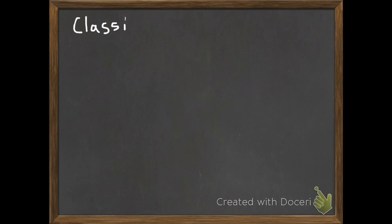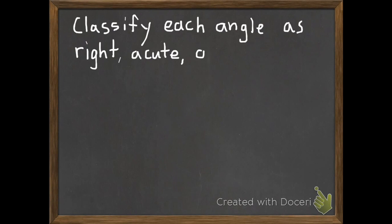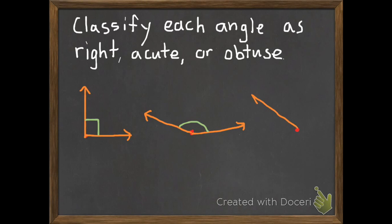Okay, and one more for you to do that I'll show you on the video. Then you'll be ready to do some on your own. So this is like my first example. It says classify each angle as right, acute, or obtuse. So here's the three angles.